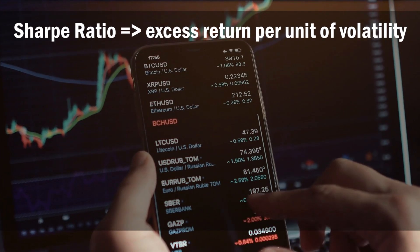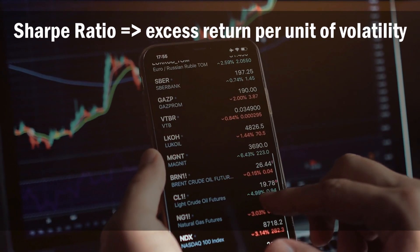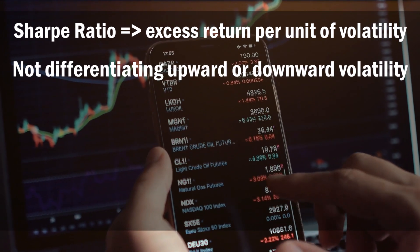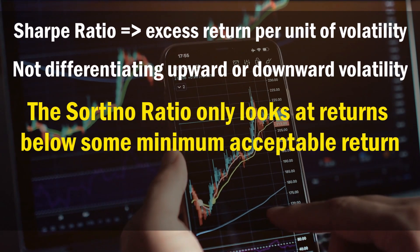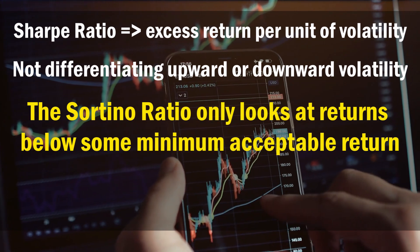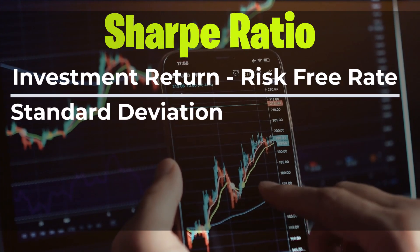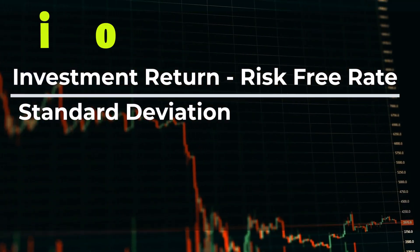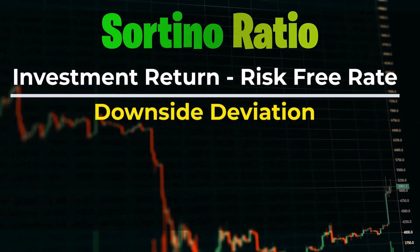The Sharpe ratio looks at excess returns per unit of volatility, and it doesn't differentiate between upside and downside volatility. The Sortino ratio, on the other hand, looks at returns below some minimum acceptable return. In other words, the Sortino ratio is like the Sharpe ratio, except that it replaces the standard deviation with downside deviation.